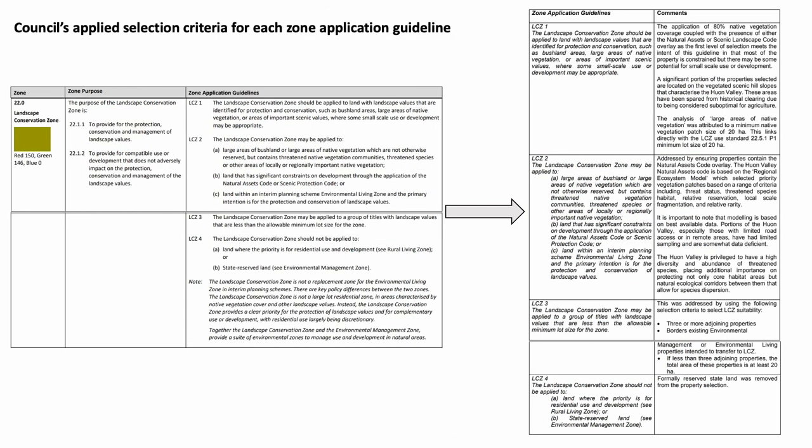The process involves taking regionally mapped characteristics of land — for example, vegetation, flood risk and agricultural potential — and applying these to individual properties. If, for example, a property has been recommended to change from rural resource to landscape conservation, it is most likely due to the property being mapped as containing more than 80% native vegetation cover, or an existing environmental living zone property that is not earmarked for densification of residential use.